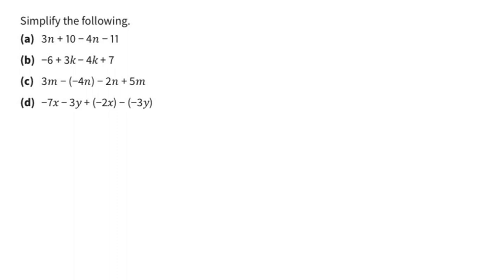Hello everyone, welcome to this part of the problem. We are going to simplify expressions that can have different terms. Take note: the sign in front of a variable belongs to that variable. For part a: 3n minus 4n gives negative n, and for the constants positive 10 minus 11 gives negative 1. That is the answer for part a.